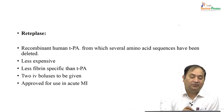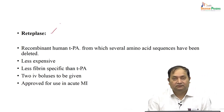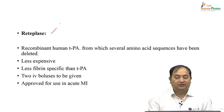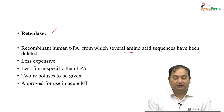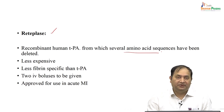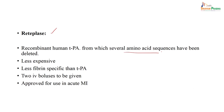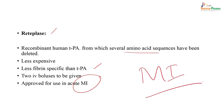Another tissue plasminogen activator is reteplase. It is a recombinant tissue plasminogen activator, produced by recombinant DNA technology, and several amino acids in its sequence have been deleted. Compared to other tissue plasminogen activators, it is less expensive and less fibrin-specific. It is given as an IV bolus dose. Reteplase is approved for acute MI.